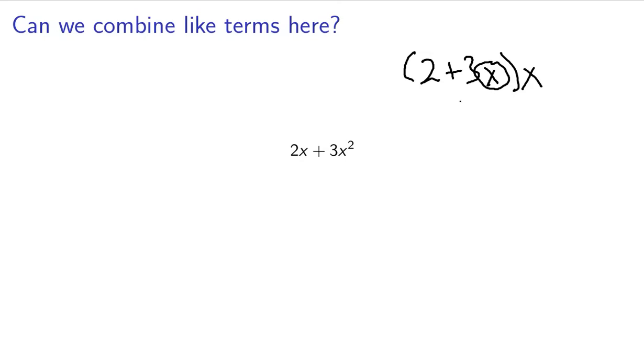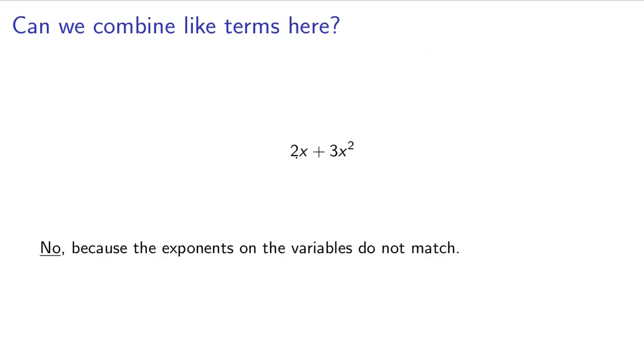So that means you can't combine these because whenever you pull out the x, you still have an x left right here. So since these exponents don't match, since the variables don't match, we can't combine these because they're not like terms.